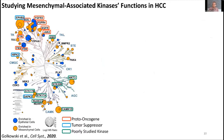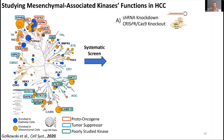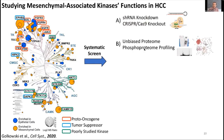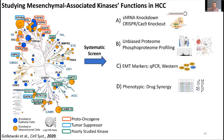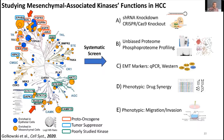We wanted to dig deeper and validate some of these kinases. We established a systematic pipeline: first, shRNA knockdowns or CRISPR-Cas knockouts in three different mesenchymal HCC cell lines, followed by unbiased proteome and phosphoproteome profiling to identify associated pathways. We also perform EMT marker quantification by qPCR and Western blot, phenotypic screening for drug synergy, and migration/invasion assays. In our Cell Systems paper, we started by knocking down AXL, NUAK1, and NUAK2.